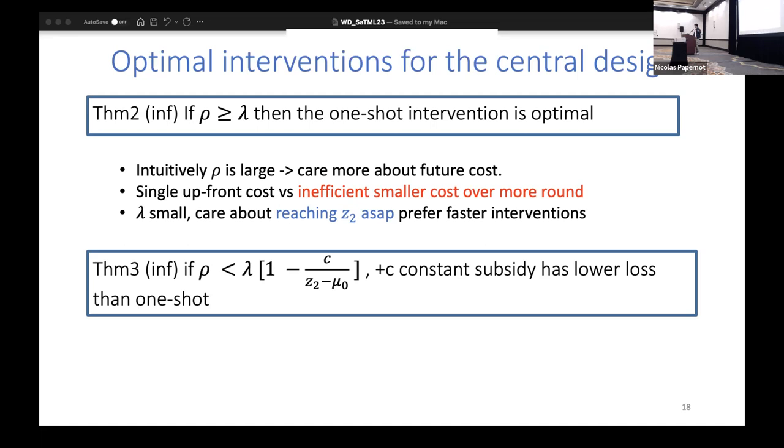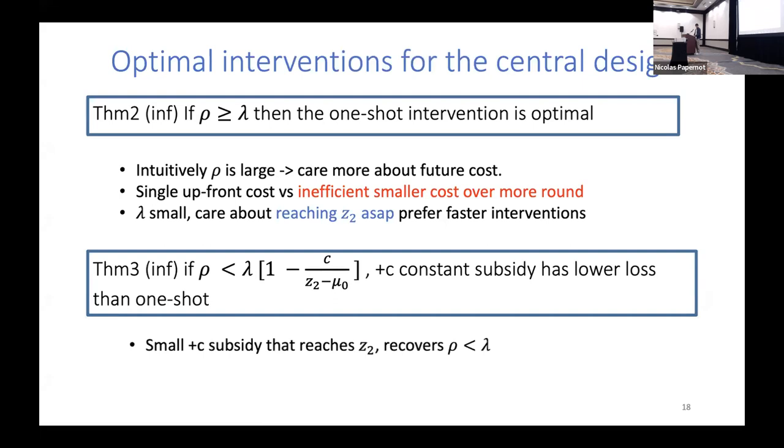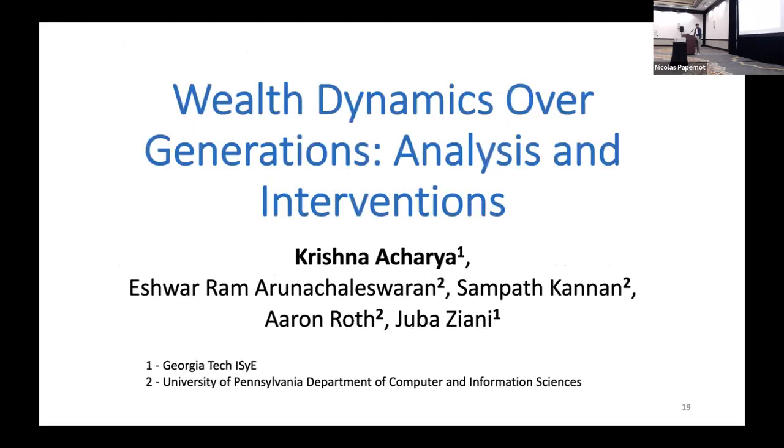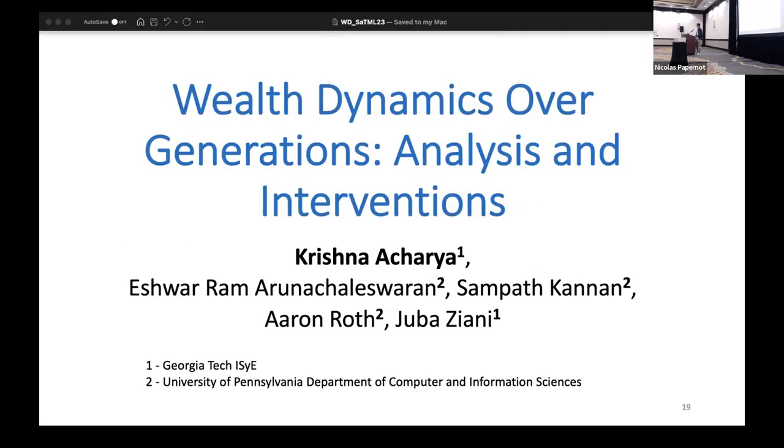I would just like to highlight here that if you have a small plus c subsidy, you actually recover this ρ > λ condition - they're kind of complements. We also show in the paper that these are tight conditions. For more results, you would like to check out the paper. Thanks!